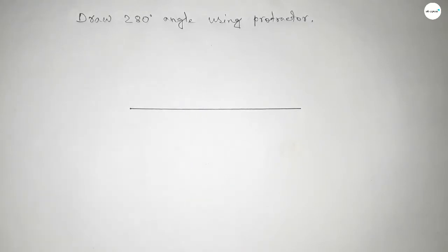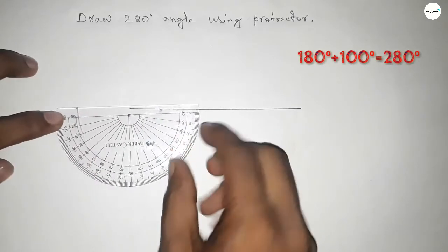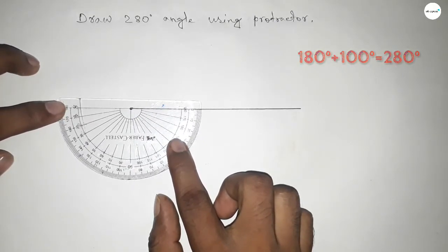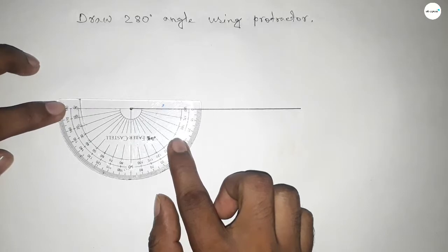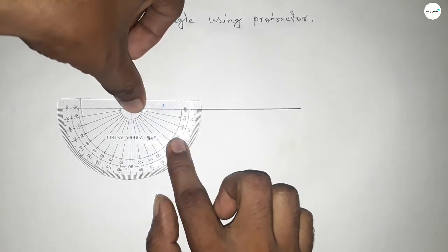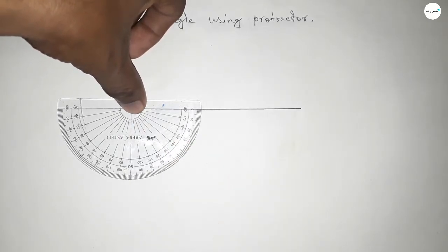So if we add 100 degrees with 180, then we can get 280 degrees. Putting the protractor this way on the line perfectly, now counting the angles.